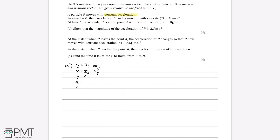The acceleration we don't know, but we want to find it — that's the purpose of the question — so we put a question mark. Last of all, t is 2 because the whole journey where the displacement is 7i minus 10j is between time 0 and 2 seconds. So in our equation we need terms for s, u, a, and t but not v. The SUVAT equation that has these is s equals ut plus half a t squared.